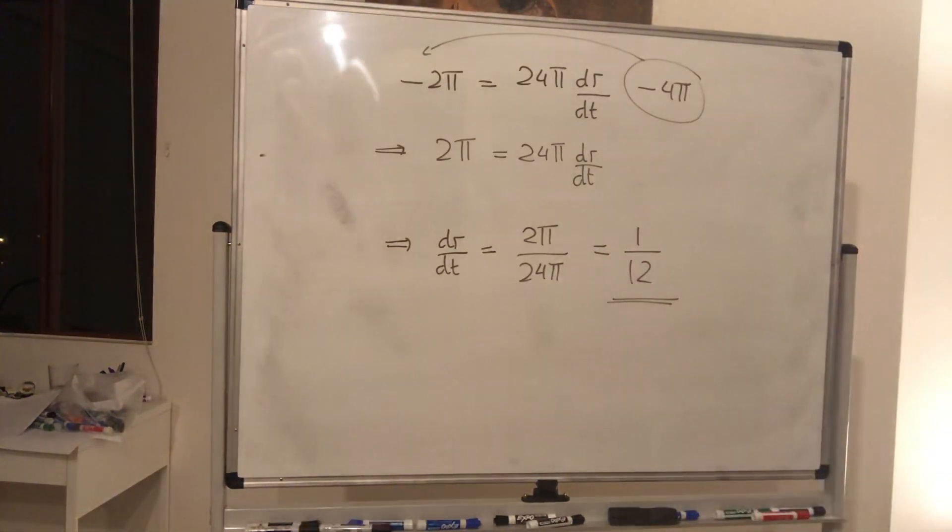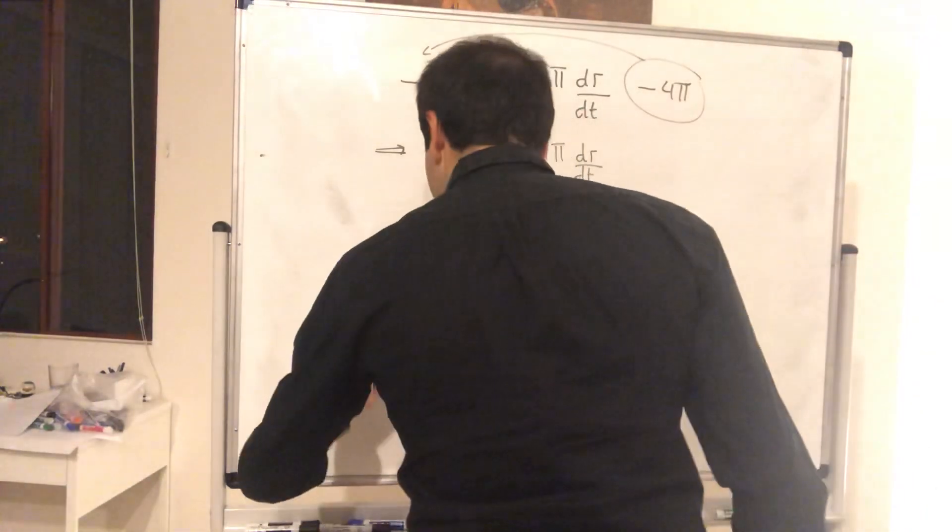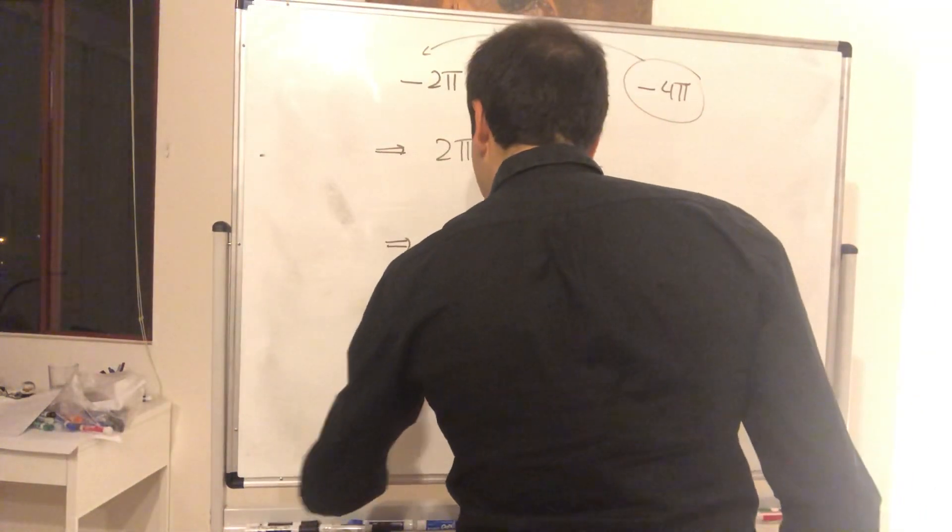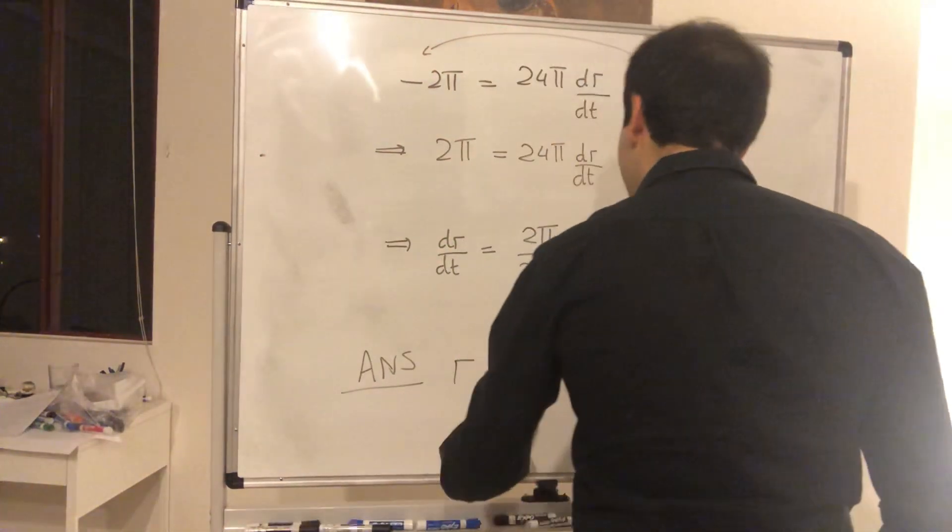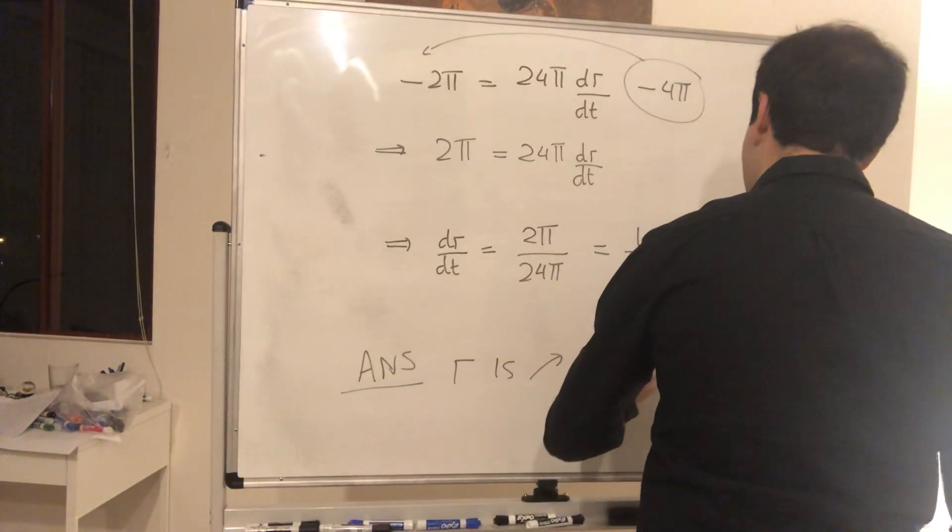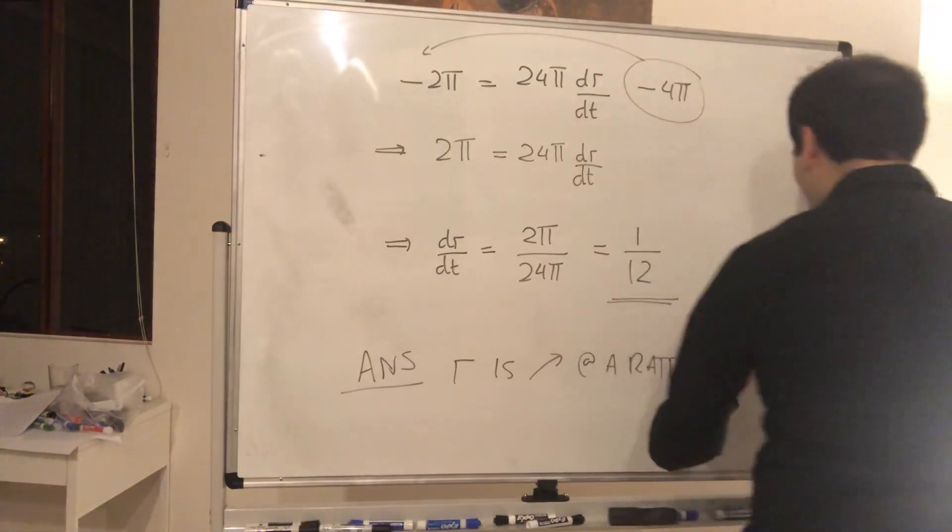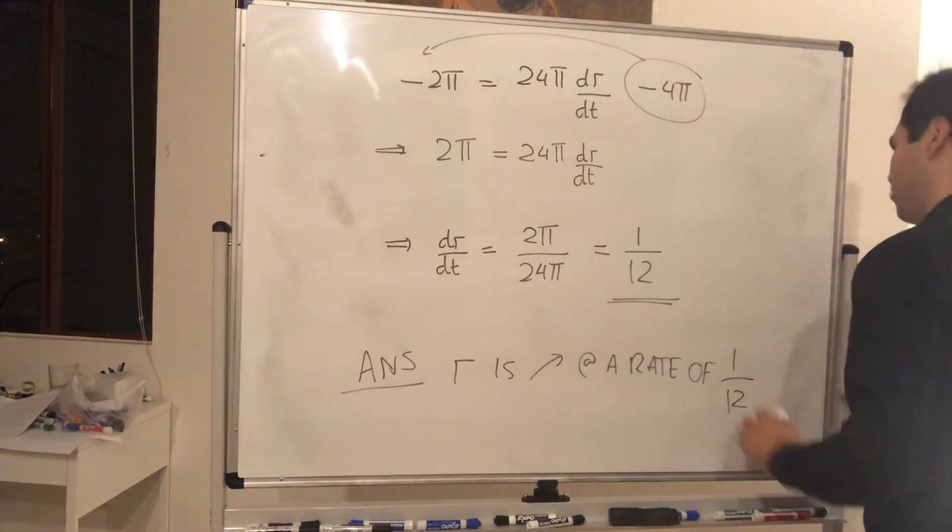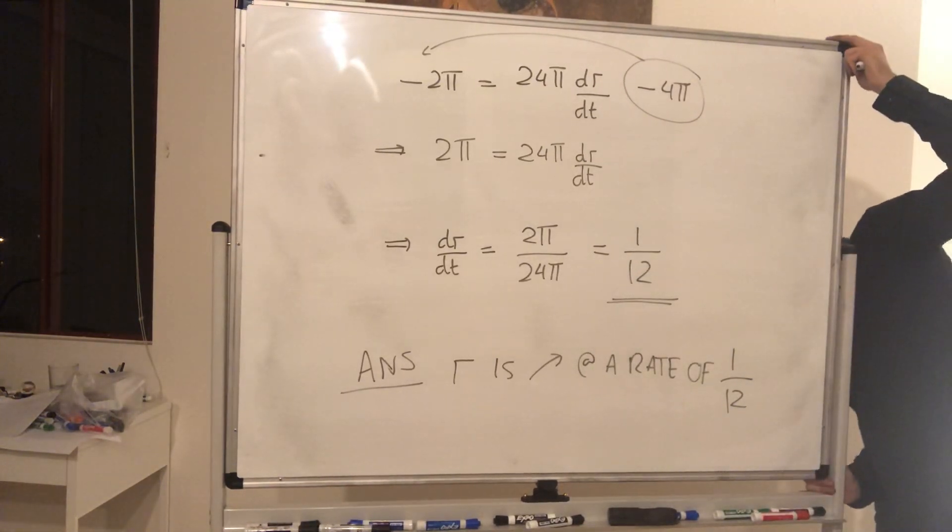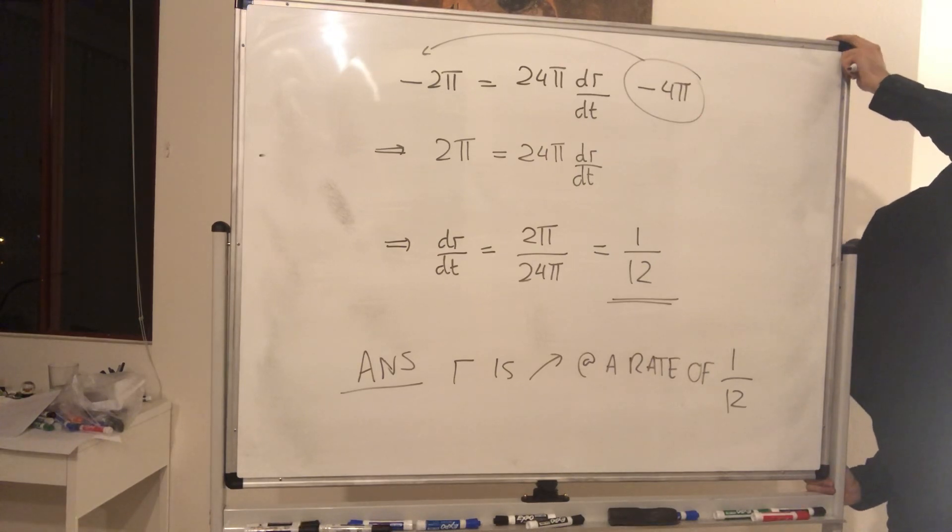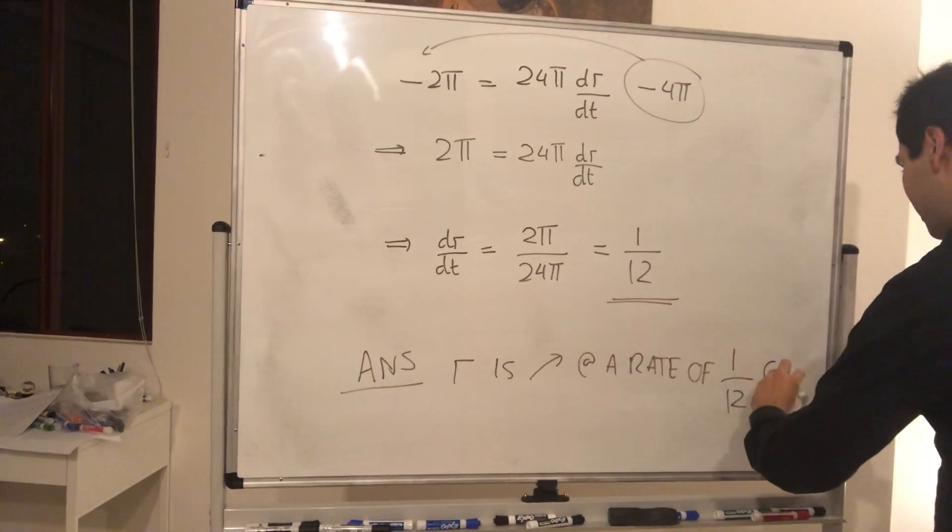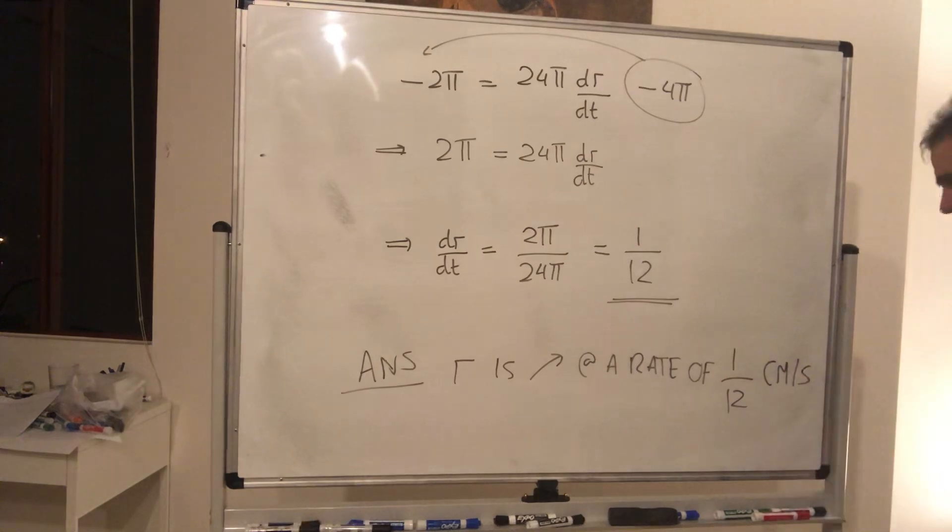And therefore, what we end up getting is dr/dt is 2π over 24π, which is 1/12. So, in other words, what's the answer? The answer is, well, first of all, this is positive, so r is increasing at a rate of 1/12, and I forgot the units, let's see, centimeter per second.